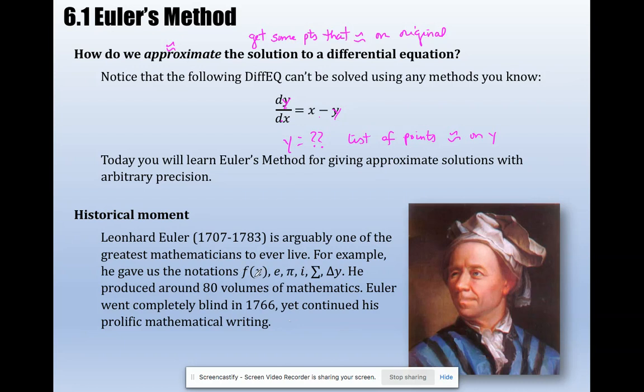So f of x notation, that's Leonard. He came up with that. And much like famous musician Beethoven, Beethoven did so much of his greatest work after he was blind. So did Leonard. Pretty cool.